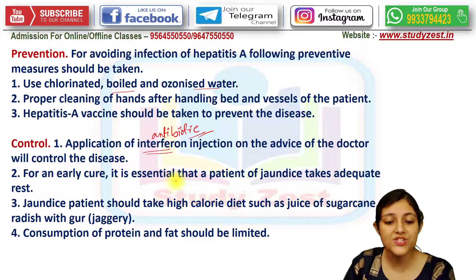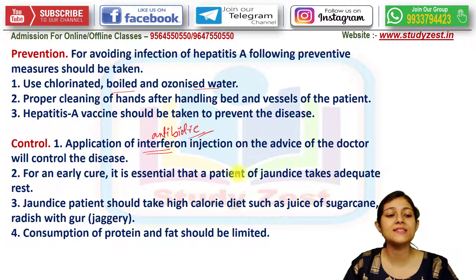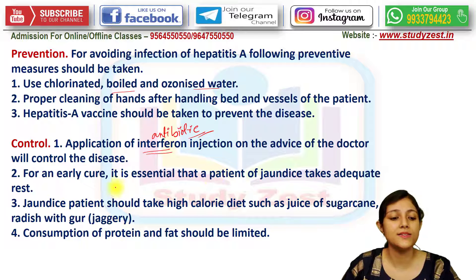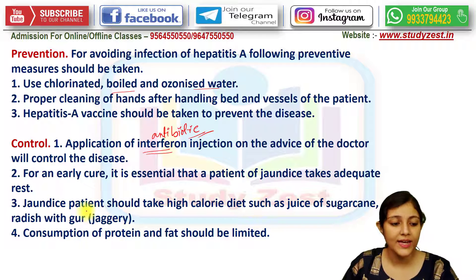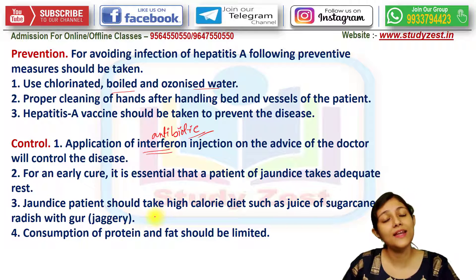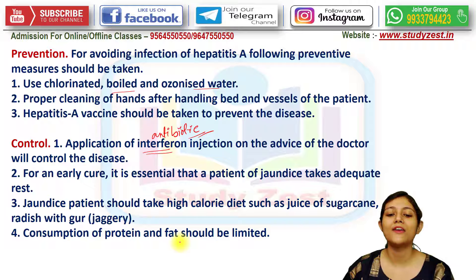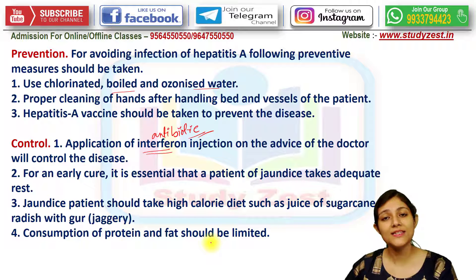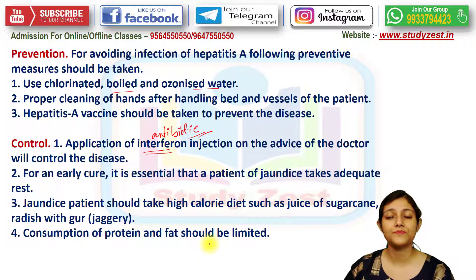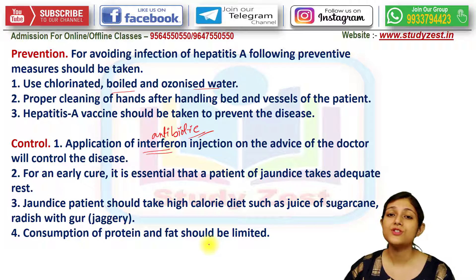A patient of jaundice must take adequate rest. The patient should take a high-calorie diet such as juice of sugar cane and radish with jaggery. Consumption of protein and fat should be limited — nuts, ghee, butter, meat, fish, and eggs must be consumed in limited amounts.